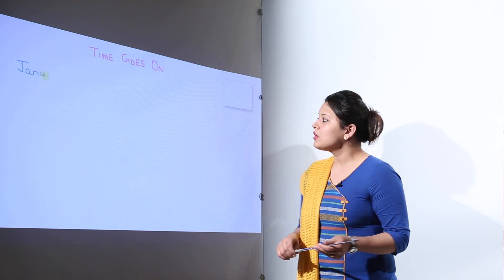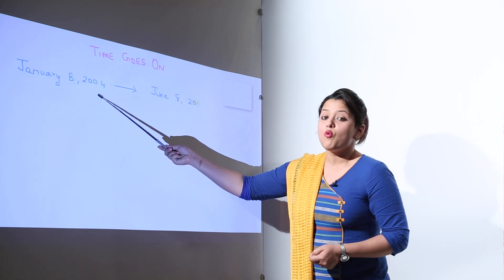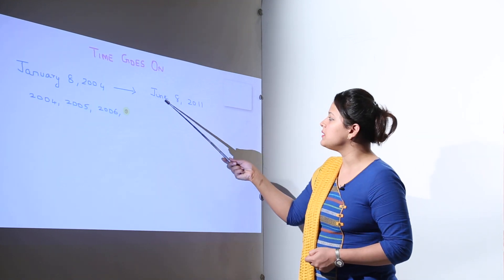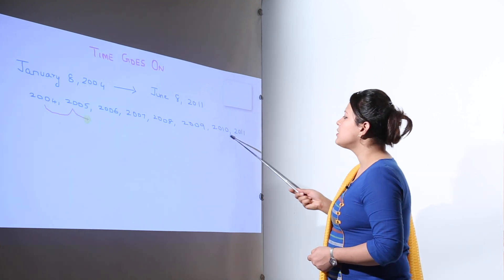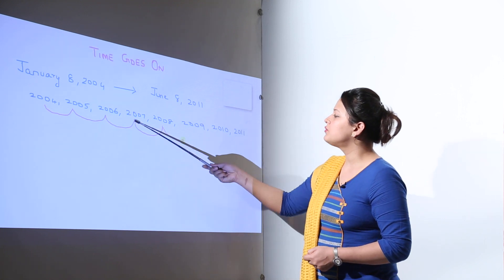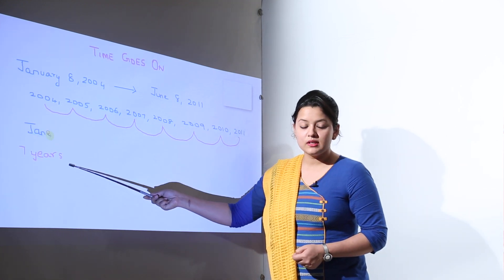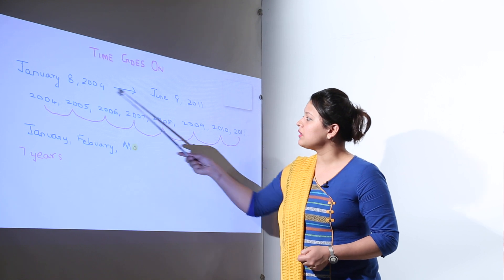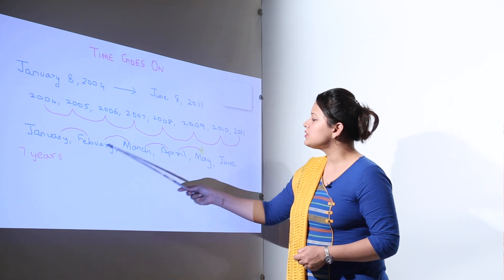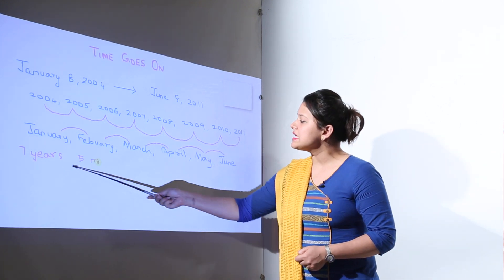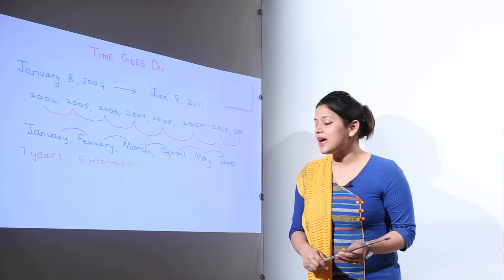Are you familiar with age? Now say Rhea was born on a date 8th of January 2004. What would be her age or how old is she going to be on June 8th, 2011? So from 2004 to 2011, we have 1, 2, 3, 4, 5, 6 and 7 years. So she is 7 years old and we can still count the months from January to June. So January, February, March, April, May up to June. So we have total 5 months. So we can write over here 7 years and 5 months. So we can say that Rhea is 7 years and 5 months old.